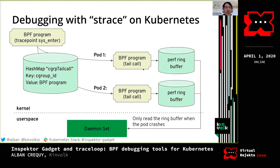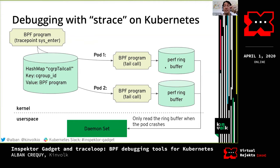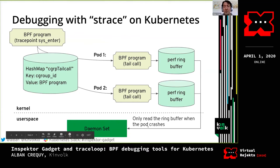Going into more detail about the BPF program: there's a BPF program on the TraceLoop sysenter. The first thing it does is look at the cgroup to distinguish which pod or container it is on Kubernetes. Then, depending on the cgroup, it redirects execution to a different BPF program that saves the system calls in one ring buffer — there is one ring buffer per pod or container. The ring buffer is configured to be overwritable, so when the buffer is full it overwrites the previous data, and it writes continuously until the user asks to debug that pod and reads the ring buffer.